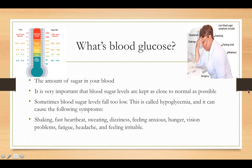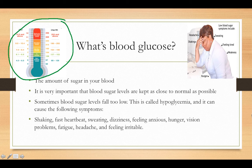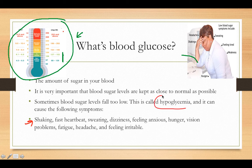What's blood glucose? It's the amount of sugar you have in your blood, and it's very important to keep it as normal as possible. Notice this graphic — green is basically where you want to be. When blood sugar is too low, we call that hypoglycemia. It can cause symptoms like shaking, fast heartbeat, sweating, dizziness, hunger, vision problems, and fatigue.